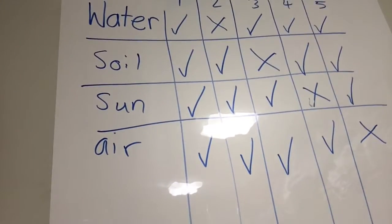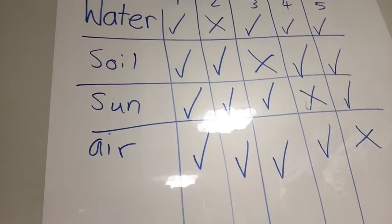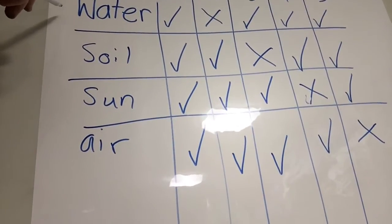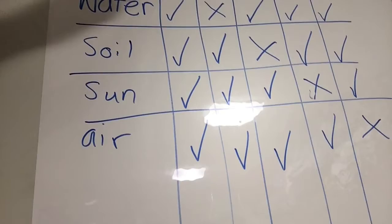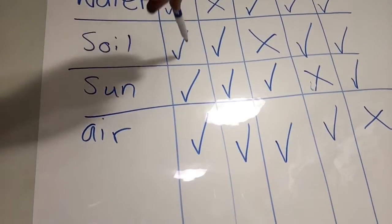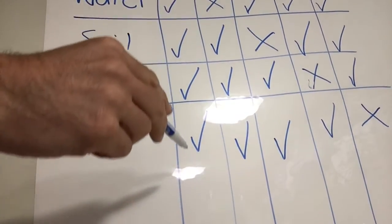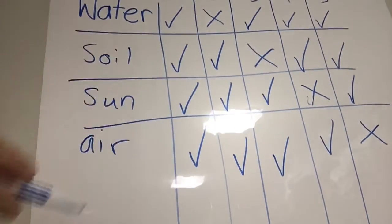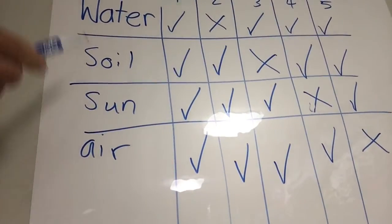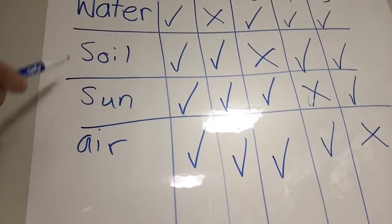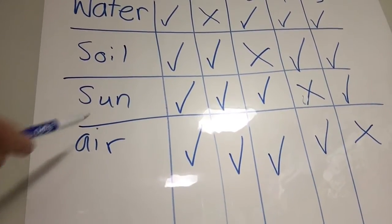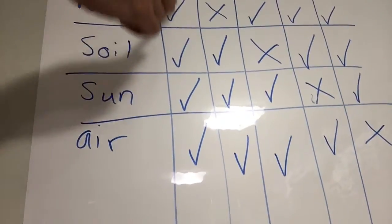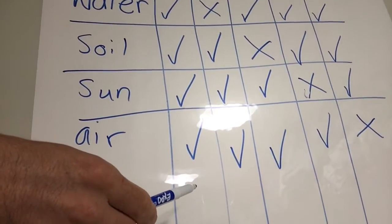As you can see, experiment one is right here. Experiment one has a check mark next to everything. So experiment one is going to get water, soil, sun, and air. We expect that these plants should grow the most.